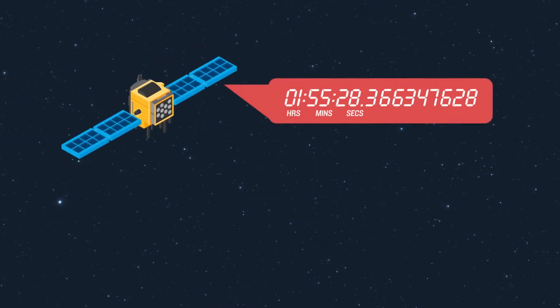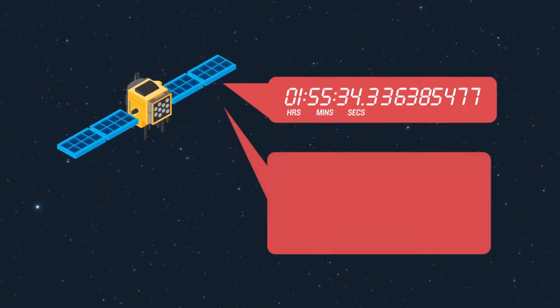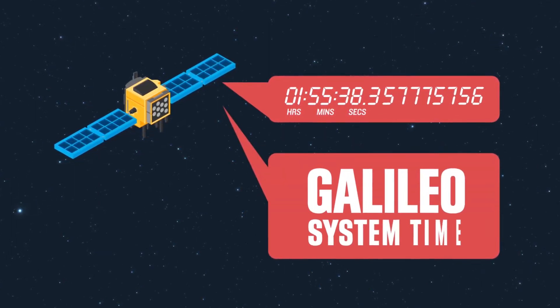GALILEO provides a timepiece that's accurate to around 10 billionths of a second – GALILEO system time.